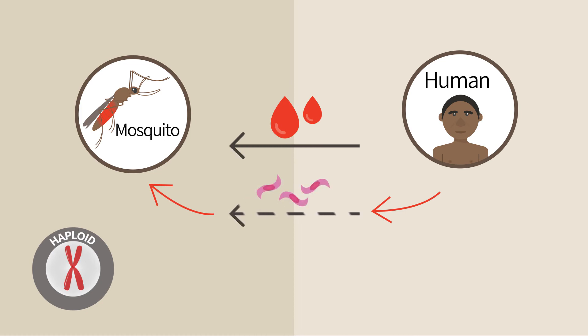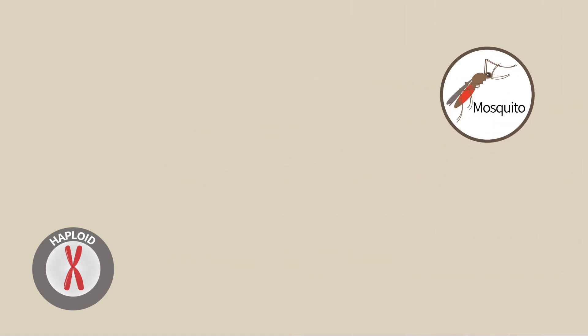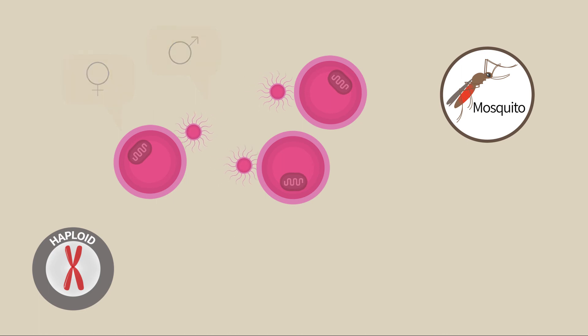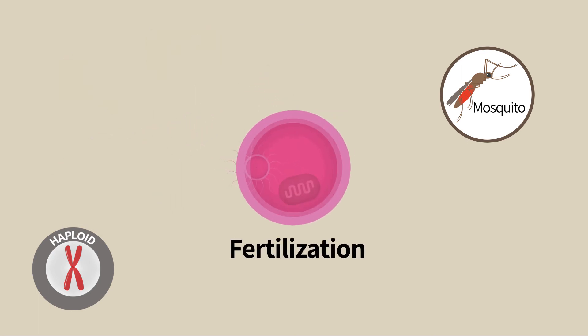The malaria parasite reproduces anisogamically. Some of its gametes evolve into large gametes analogous to female eggs; others evolve into small, male-like sperm cells. The small gametes fertilize the large ones and form a zygote — a diploid parasite.